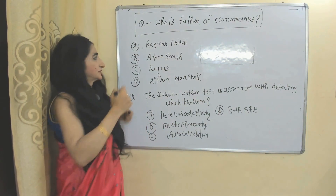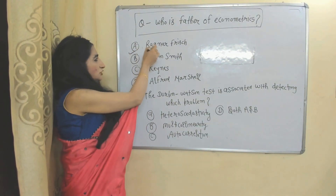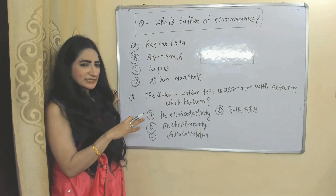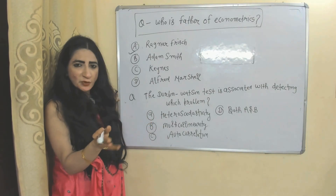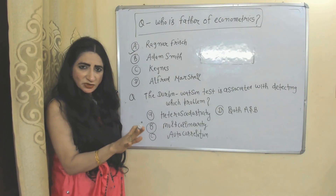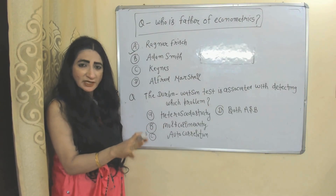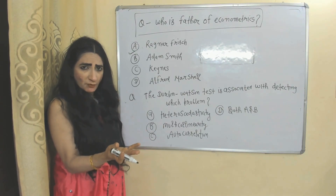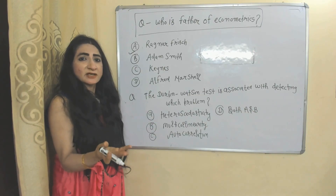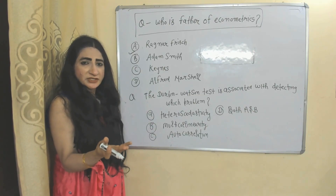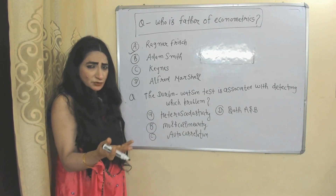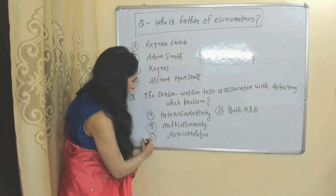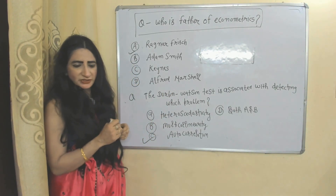MCQ Question 3: Who is the father of econometrics? The correct answer is A: Ragnar Frisch. MCQ Question 4: The Durbin-Watson test is associated with detecting which problem? No autocorrelation is an assumption of the regression model, and the Durbin-Watson test is the famous test used to detect autocorrelation. The correct answer is C: autocorrelation.